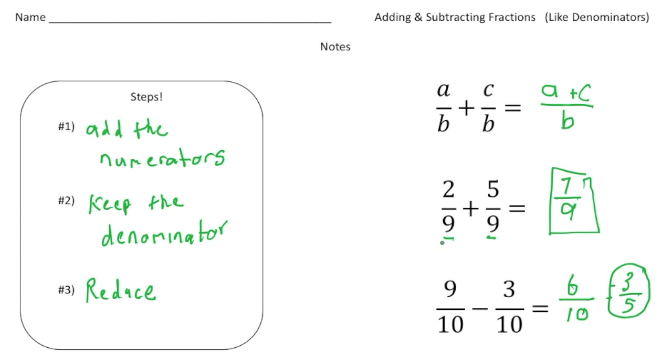So add the numerators, keep the denominator, and reduce. Those are the three steps to add and subtract fractions with like denominators.